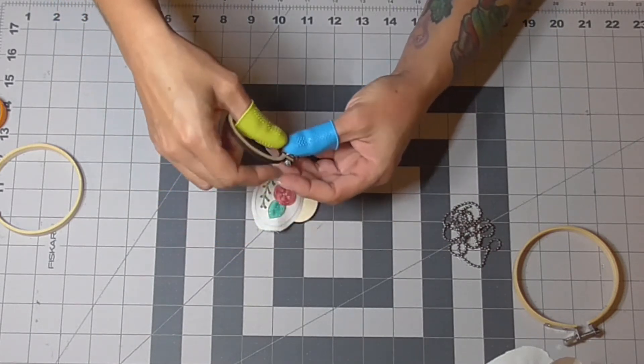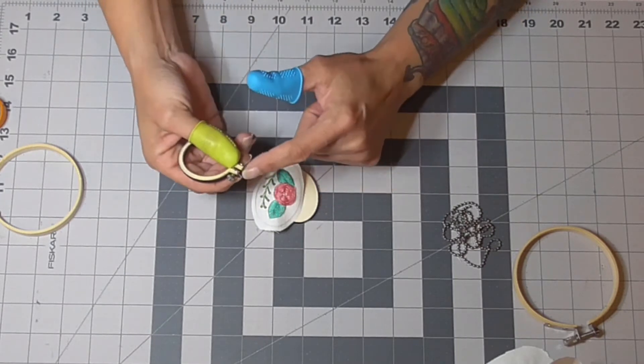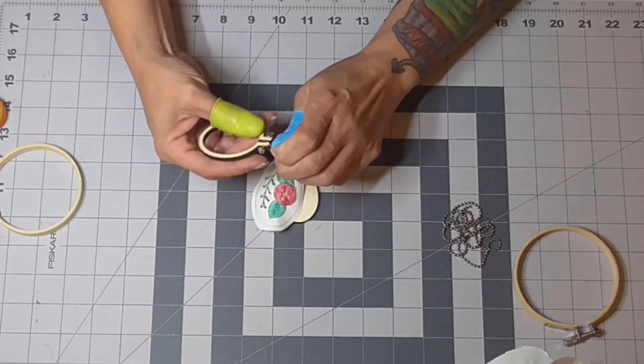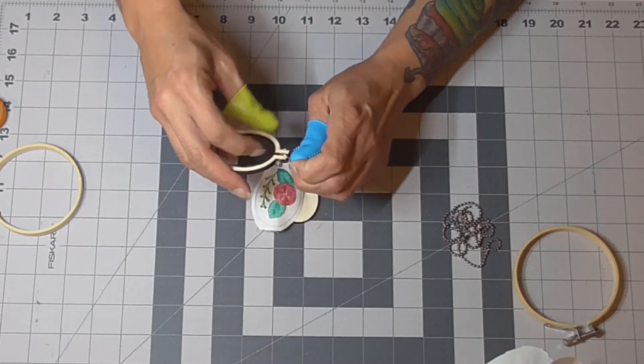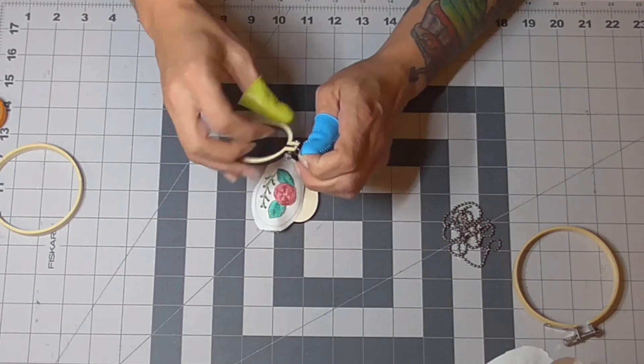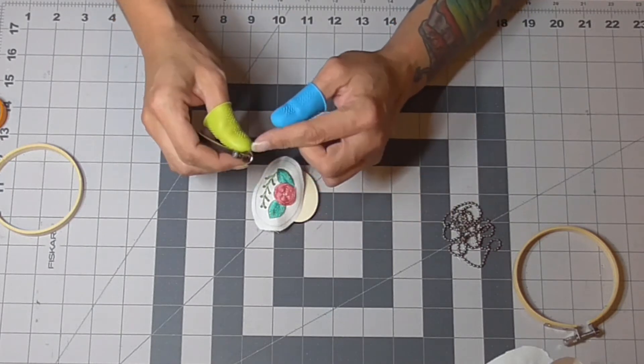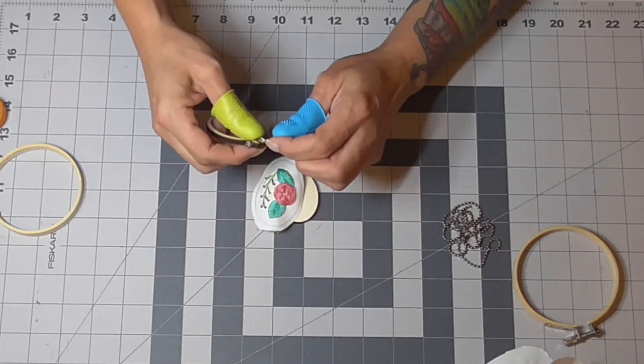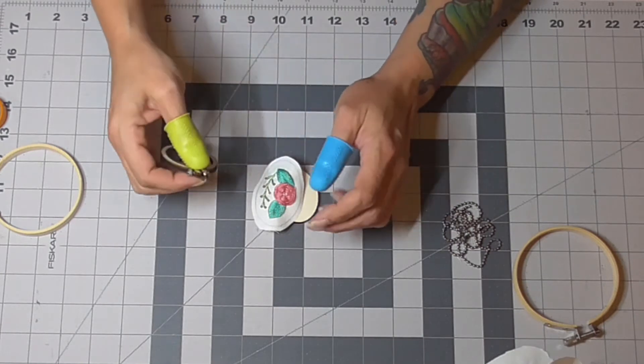And before you put everything together, double check to make sure your jump ring is in there because the chain is not going to go through this section. I don't know who designed these, but they did not leave enough room to actually put a chain through there, so I put a jump ring in these kits. Just make sure that they're securely in there.